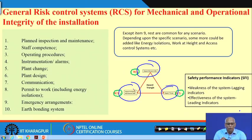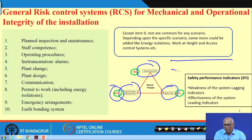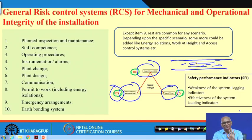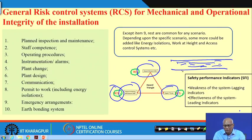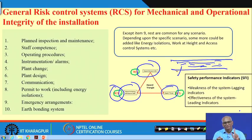It is very important to know what the initiating mechanisms are and to put interventions to control them. Risk control systems are to be placed at the initiating mechanisms. For example, suppose a hazardous liquid is going through a pipe — as long as it is in the pipe, nothing will happen. For technology purposes you have to use that hazardous liquid, you cannot eliminate it. What is the initiating mechanism? If the pipe is weak and breaks, then the hazardous liquid will come out. We have to put interventions so that the pipe will not break.